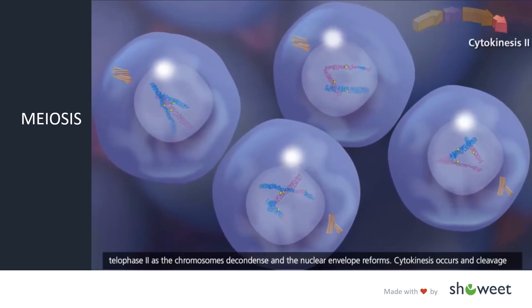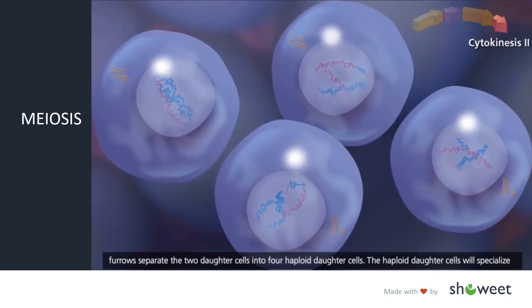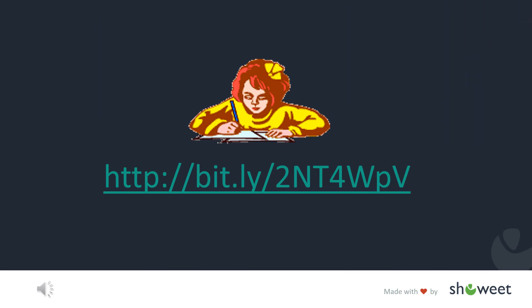Cytokinesis occurs, and cleavage furrows separate the two daughter cells into four haploid daughter cells.